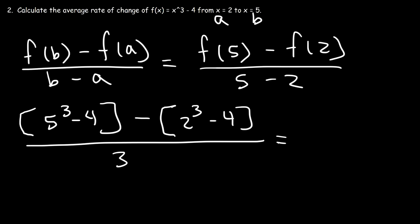Now what is 5 to the third power? 5 to the third power, that's 5 × 5 × 5. 5 times 5 is 25. And 25 times 5 is 125. Now 2 to the third, that's 2 × 2 × 2, which is 8.